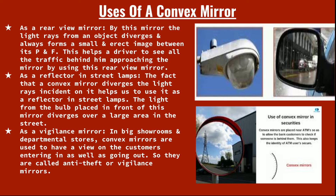As a reflector in street lamps, the fact that the convex mirror diverges the light rays incident on it helps it to be used as a reflector. The convex mirror is positioned so that light can be diverged; the light rays from the bulb placed in front of the mirror diverge over a large area of the street. As a vigilance mirror, in big showrooms or departmental stores, convex mirrors are used to monitor customers coming in and going out. These are called anti-theft or vigilance mirrors, used for security purposes.